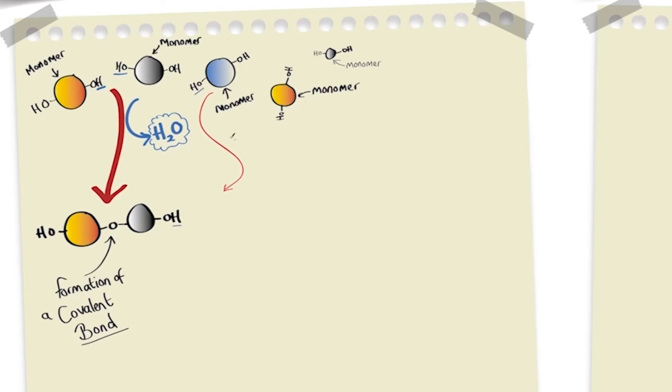We can see the hydroxyl group and the hydrogen. This will give us our water molecule once more, so we can take that hydrogen, and we can take the hydroxyl. And again, we have the formation of a covalent bond.